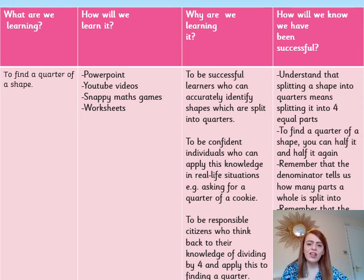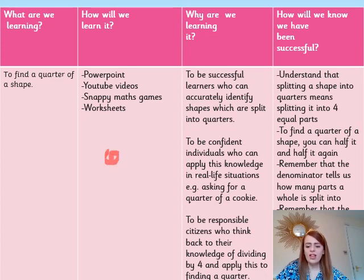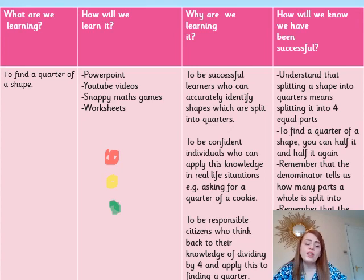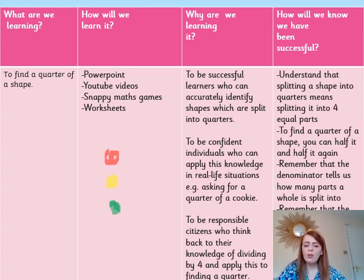Please traffic light your work at the bottom to let me know how you get on. A red is for when you find it tricky, a yellow is for if you think you need some practice but you're getting it, and green means that you're good to go and feeling confident with this task. Good luck with your task and bye for now!